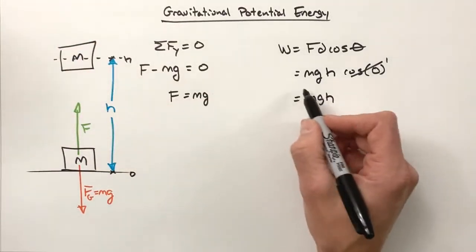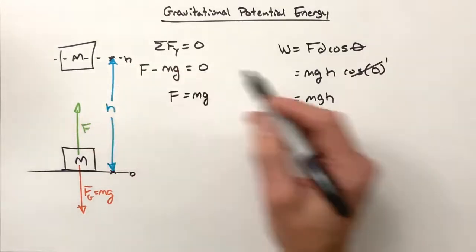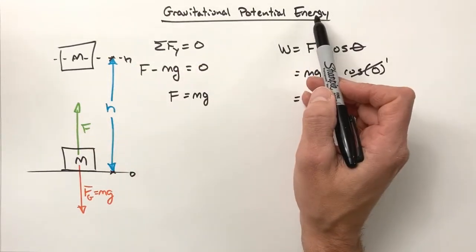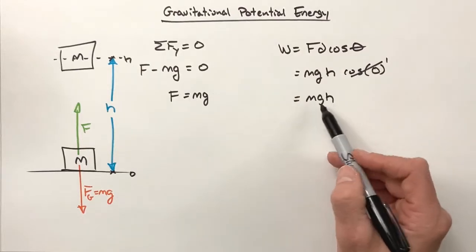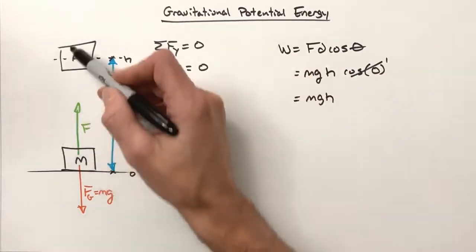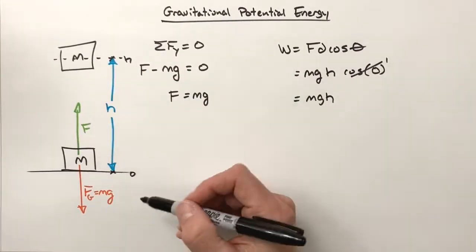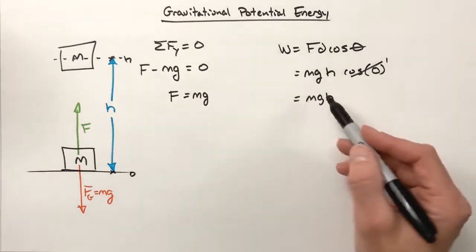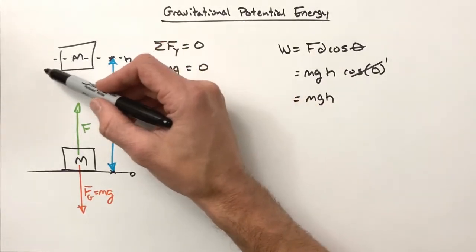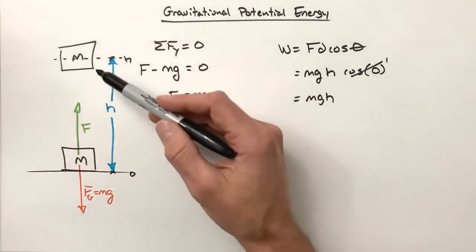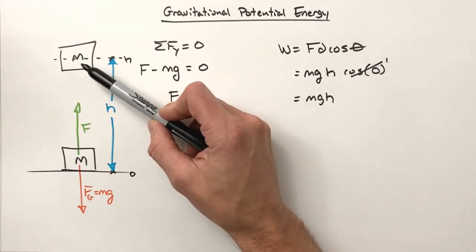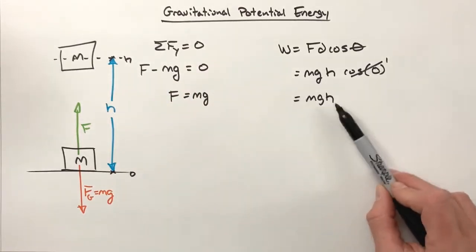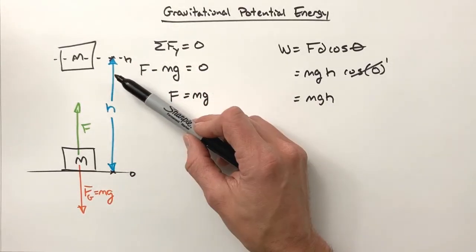Where's the block storing the energy? What's actually happening here? Well, once the block gets up here, we've taken this energy, done work on this block, and we've stored it. That's what potential means - this is stored energy. So we've stored this much energy in lifting this block. And here's the weird thing to think about: we've stored that energy in the gravitational field.